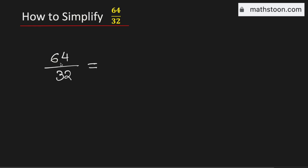In this video, we will simplify the fraction 64 over 32. See that 64 is divisible by 2, so we can write it as 2 times 32. As 32 is a factor of 64, we will write the denominator 32 as 1 times 32.